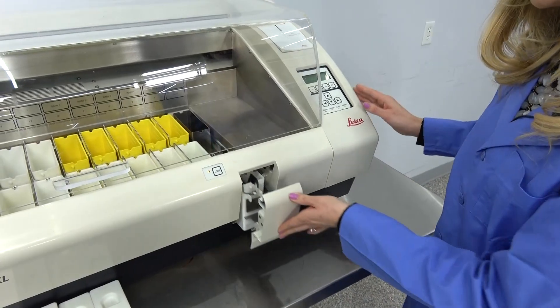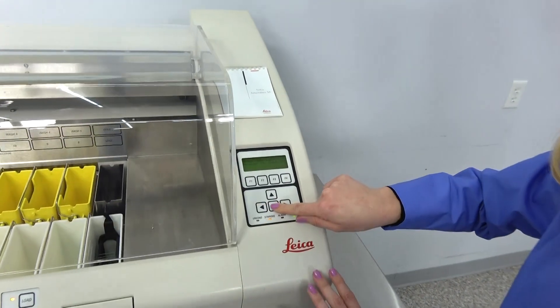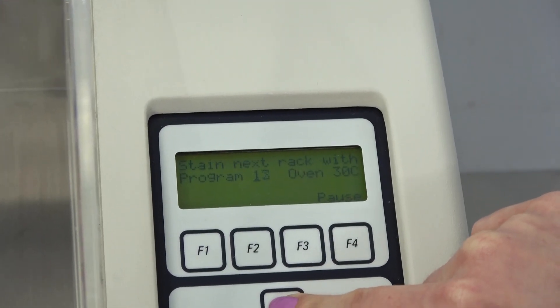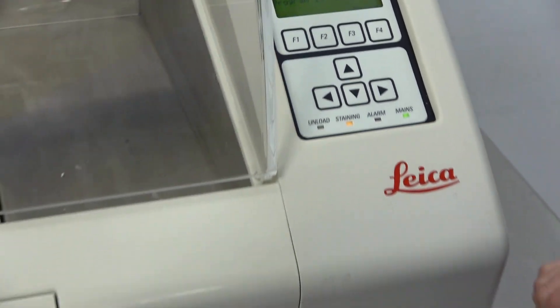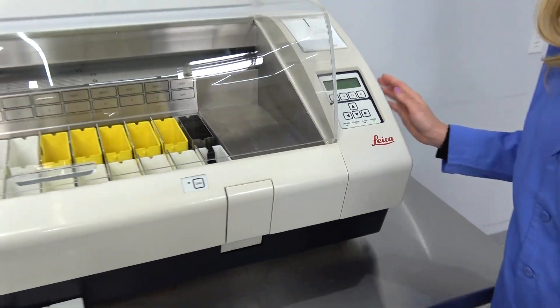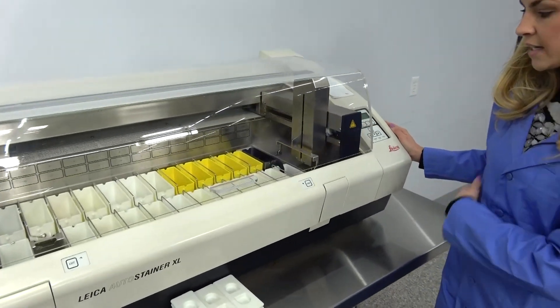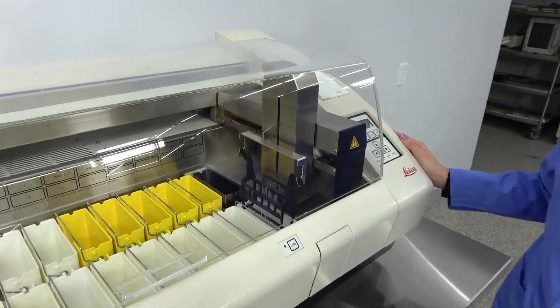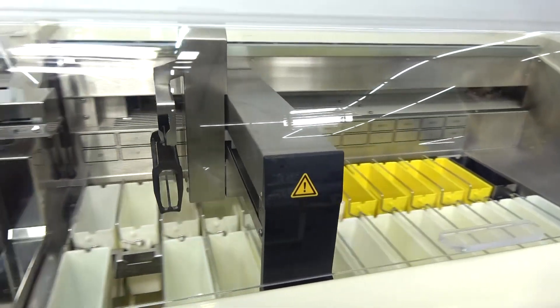Here on the display you can easily toggle through all of your programs. Currently we are going to pick program 15 and we're going to hit load. The robotic arm is going to come back to the initial position, pick up the basket, and it's going to transport to any program that you have in.